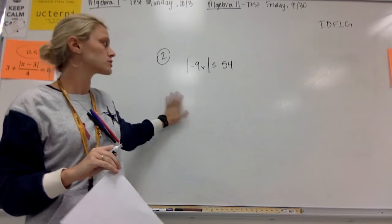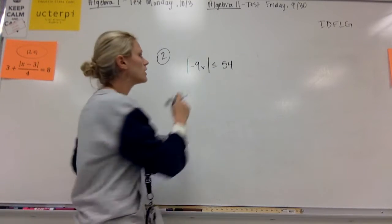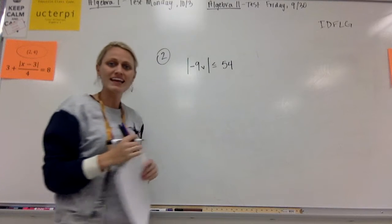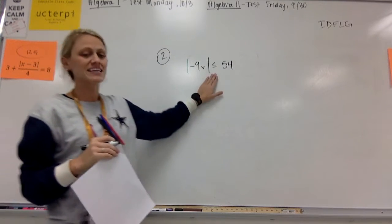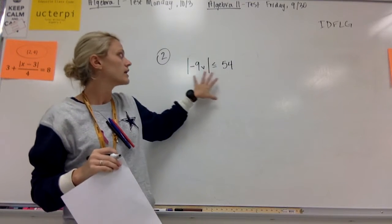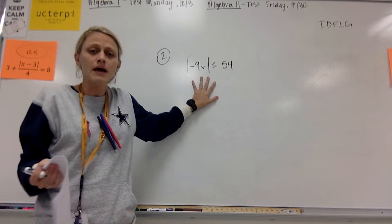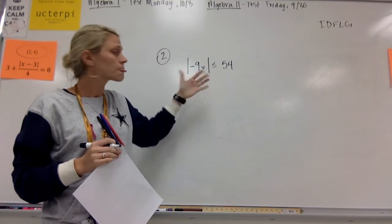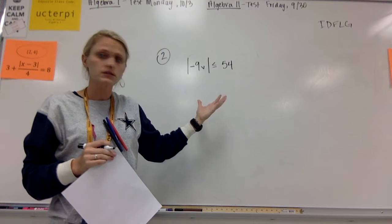So this is number two from your paper. We've got the absolute value of negative 9V is less than 54. So again, our first step is to isolate our absolute value expression, which it's already done for us.